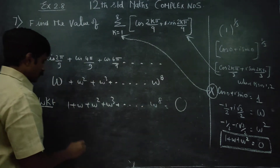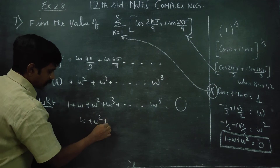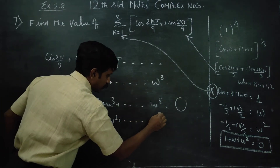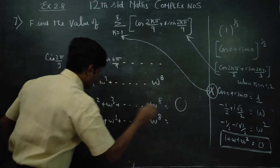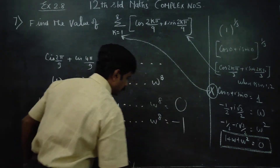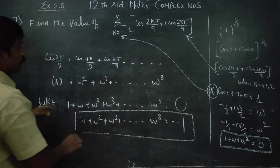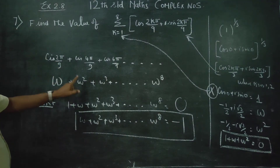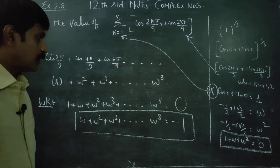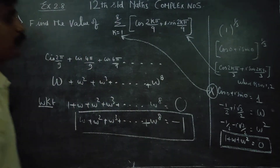We know that 1 plus omega plus omega square plus omega cube, dot dot dot, plus omega power 8 equals 0. Therefore, omega plus omega square plus omega cube plus dot dot dot up to omega power 8 equals 0 minus 1, which is minus 1.